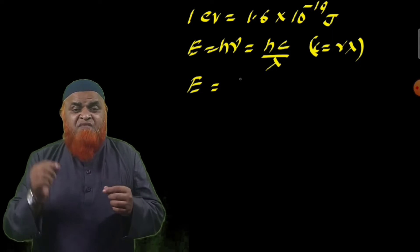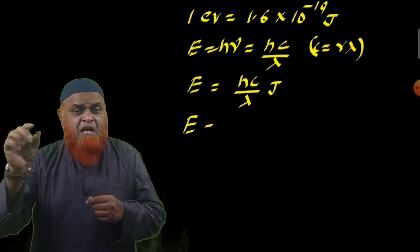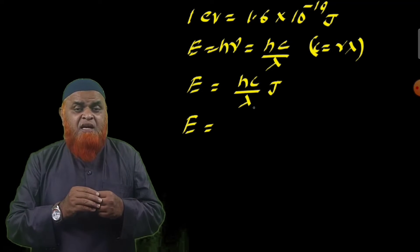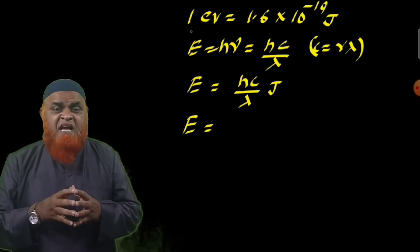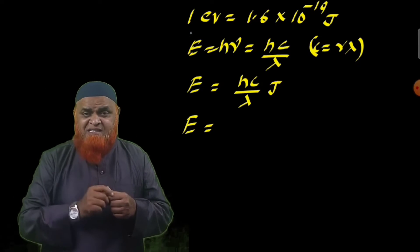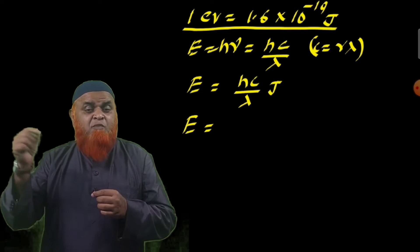Which is in joules. But if you divide these joules by 1.6 times 10^-19, it gets converted into electron volts. The reason for that is you all know that one electron volt is equal to 1.6 times 10^-19 joules.